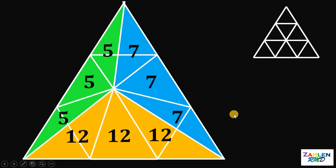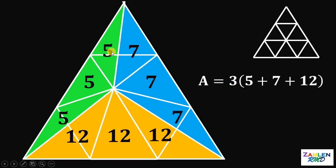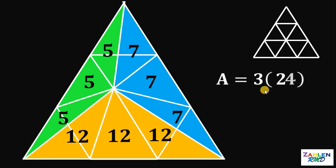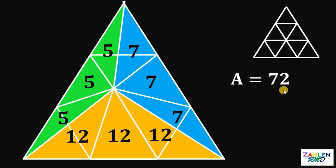Now at this point, we can find the area of this equilateral triangle, because the area must be equal to 3 times 5, plus 3 times 7, plus 3 times 12. Or simply 3 times the quantity 5 plus 7 plus 12. Now 5 plus 7 plus 12 gives us 24, and 3 times 24 gives us 72. Therefore, the area of this equilateral triangle must be equal to 72.